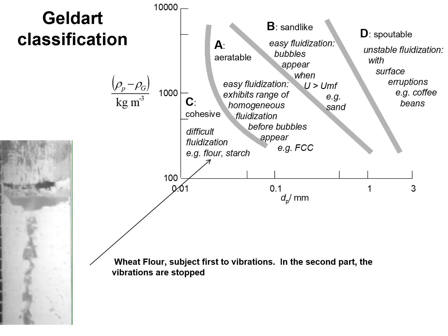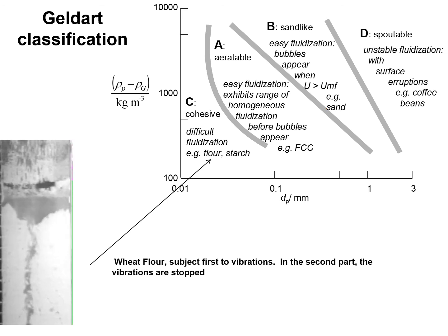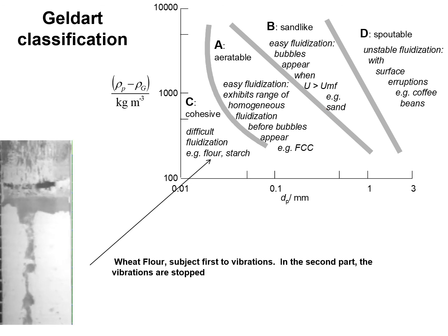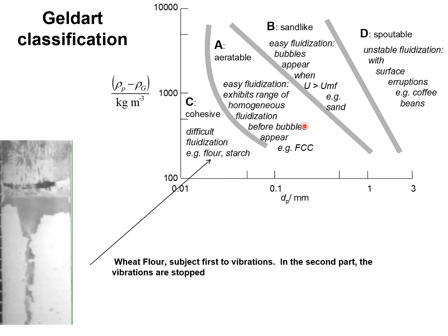The moral here is that we need to vibrate the bed in order to allow gas through it. Indeed, in silos containing particles, if we open the valve at the bottom of the silo, nothing flows through unless you vibrate the silo a little bit — that allows the particles to flow downwards. So we now have a good appreciation of fluidization of Geldart C-type powders and A-type powders as in the foregoing slides.